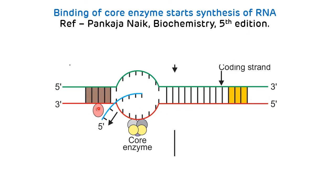The binding of the core enzyme starts the synthesis of RNA. The sigma factor is removed from the RNA polymerase enzyme once N nucleotides have been added to the RNA. After sigma factor removal, transcription continues by the core enzyme, which contains 2α, 1β, 1β', and Ω subunits. The RNA is synthesized in the 5' to 3' direction.